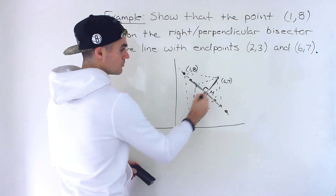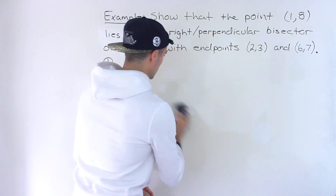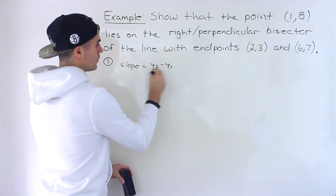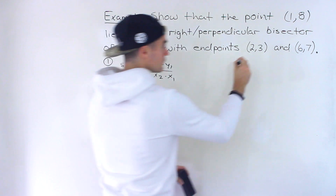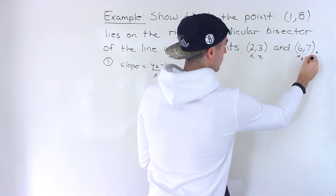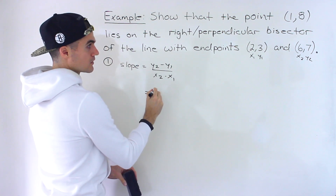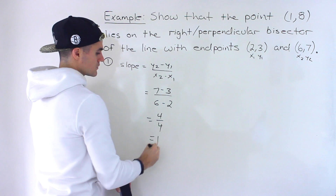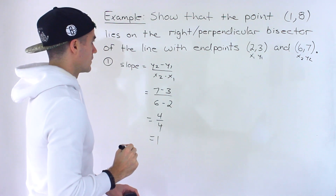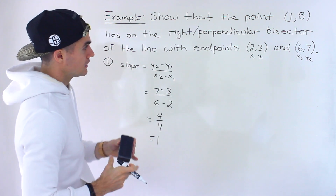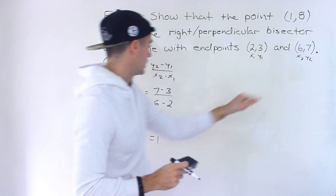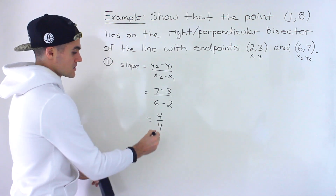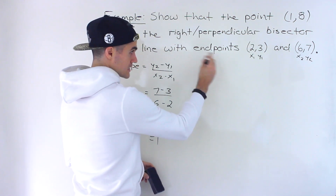The first thing I'm going to do is find the slope of this line. The slope formula is y2 minus y1 over x2 minus x1. Labeling (2, 3) as x1, y1 and (6, 7) as x2, y2, we get 7 minus 3 over 6 minus 2, which gives us 4 over 4, which is a slope of 1. If you swap the labeling, you'd get negative 4 over negative 4, which is the same slope of positive 1 — so it doesn't matter which way you go about it.